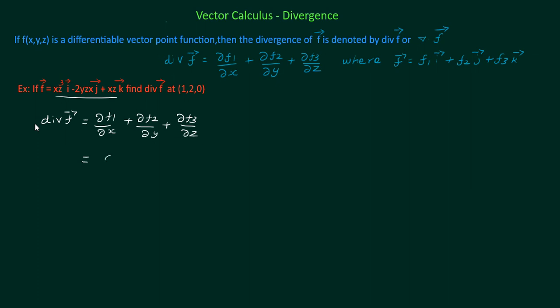Here f1 is the coefficient of i vector which is xz³, f2 is the coefficient of j vector which is -2yzx, and f3 is the coefficient of k vector which is xz.